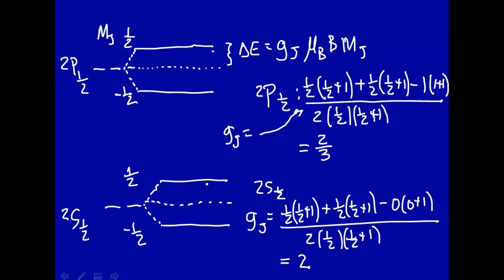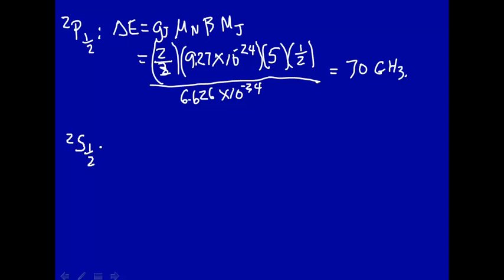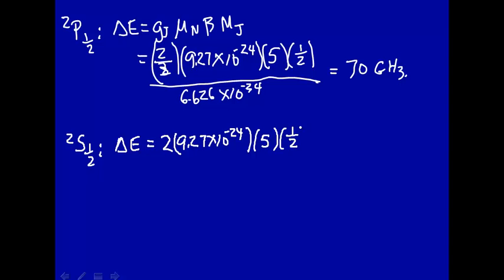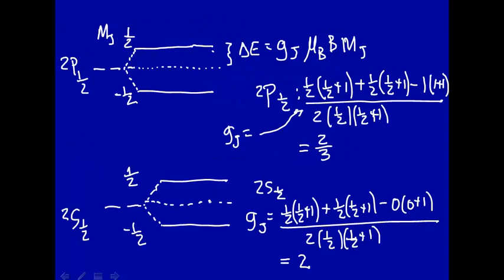Now let's do the same calculation for the doublet S one-half. Delta E equals g_J (which is two for the doublet S state) times 9.27 times 10 to the minus twenty-fourth, times the magnetic field of 5 tesla, times m_J of one-half, divided by Planck's constant 6.626 times 10 to the minus thirty-fourth. This comes out to be 23 GHz. So the energy level separation for the doublet S one-half is 23 GHz, and the total span across both sub-levels is 46 GHz.